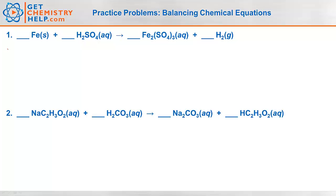Our first equation is iron reacts with sulfuric acid to produce iron-3-sulfate and hydrogen gas. We have several things that we have to balance here — iron, hydrogen, and a polyatomic that appears on both sides. As we saw in our lesson, whenever you can pick out a polyatomic on both sides, you'll balance that as a single unit.